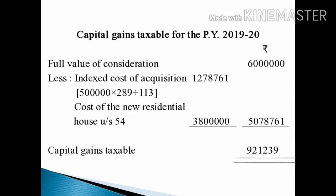The formula for Indexed Cost of Acquisition is: Cost of Acquisition multiplied by the Cost Inflation Index for the year in which the asset is sold, divided by the Cost Inflation Index for the first year in which the asset was held, or Cost Inflation Index on 1.4.2001, whichever is later. The asset was sold in April 2019, so the Cost Inflation Index for 2019-20 is 289.